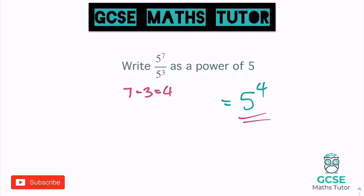Again, that's just our little trick — a little explanation as to why we can do that. If one's getting cancelled off the top and bottom, it's just the same as taking away. So seven taken away three equals four, five to the power of four.